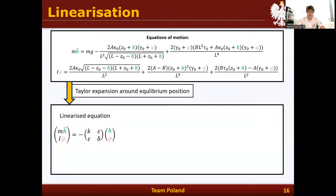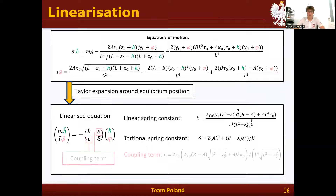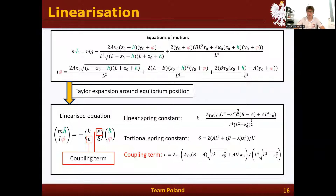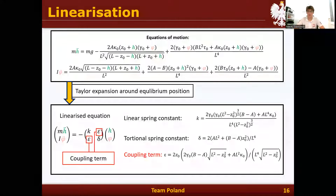We obtained linearized equations of motion, which can be written in matrix form with three coefficients: the linear spring constant, torsional spring constant, and coupling term. It is worth mentioning that all three of these coefficients can be calculated directly, because they depend on the parameters of the helical spring measured in experiments.